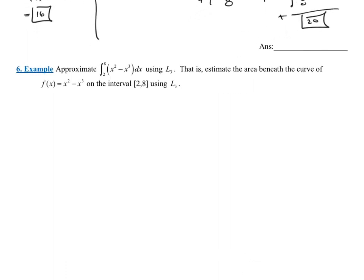Let's go ahead and look at example 6 here. It says approximate the integral from 2 to 8 of x² minus x³ dx using L₃. So what the heck does that mean? What we're doing is we're not evaluating the definite integral. That would be the exact area. We're actually going to approximate that area using three rectangles and the left endpoint of each one of those rectangles.